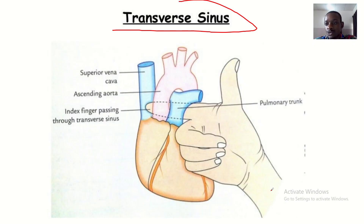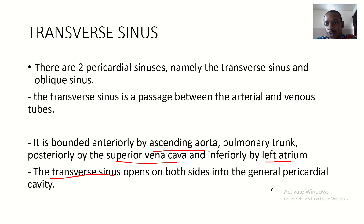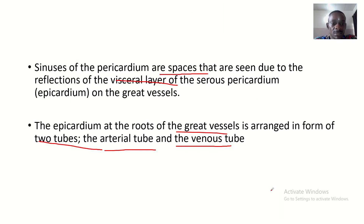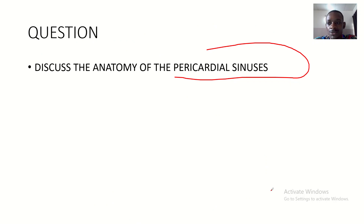So to summarize, there are two pericardial sinuses: the transverse pericardial sinus and the oblique sinus. We've covered the locations of these sinuses and their boundaries. See you guys in the next tutorial, bye.